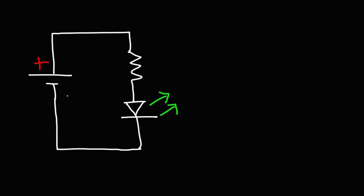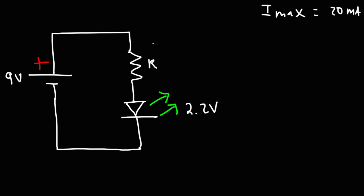Consider this circuit. Let's say we have a 9-volt battery connected to a resistor and a light-emitting diode in series with each other. The voltage drop of the light-emitting diode is 2.2 volts, and the recommended maximum current is 20 milliamps. But let's say we want a current of 10 milliamps to flow through this LED. With this information, what is the value of the resistor we should use to limit the current flowing in the circuit?